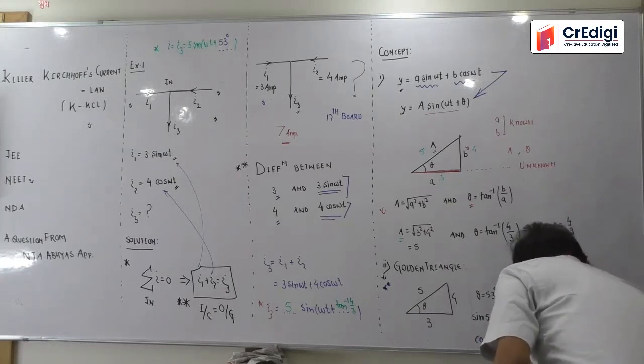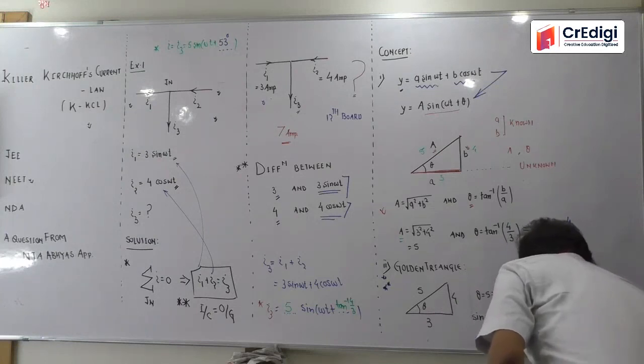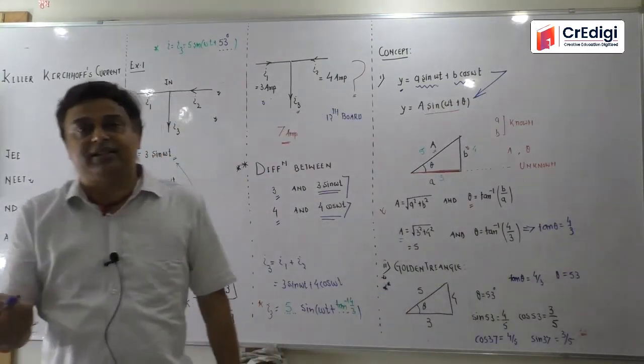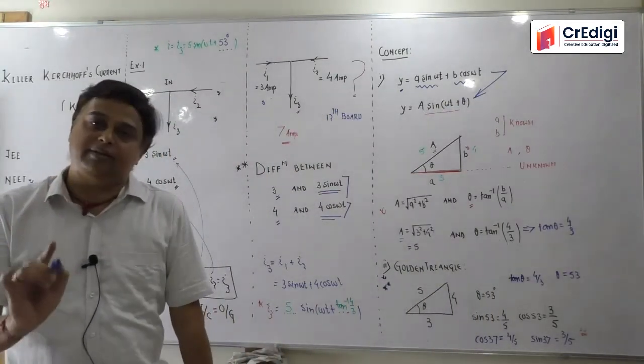And it will be equals to 3 by 5. So whether it is sine, whether it is cos, whether it is 53 or anything, you can do it quite easily.